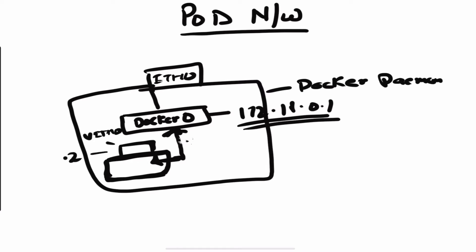Now if I create another container, the same thing happens. Another container gets a virtual interface called veth1. So this is all good at the container level.